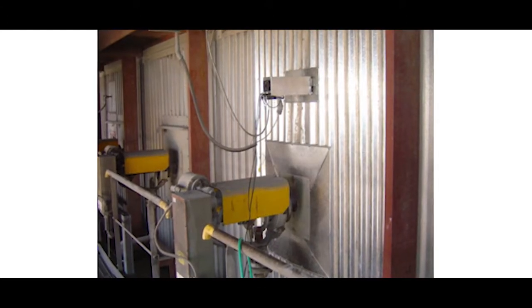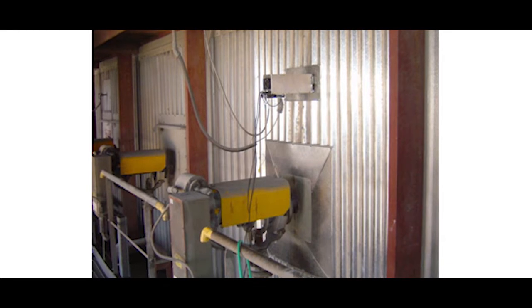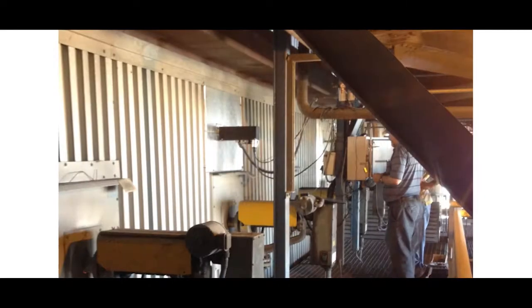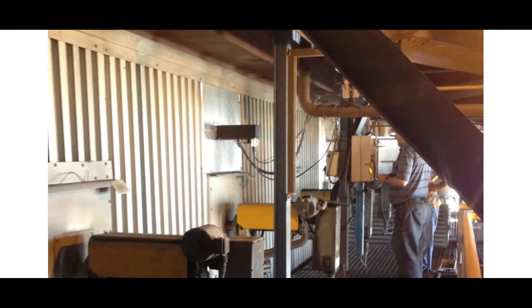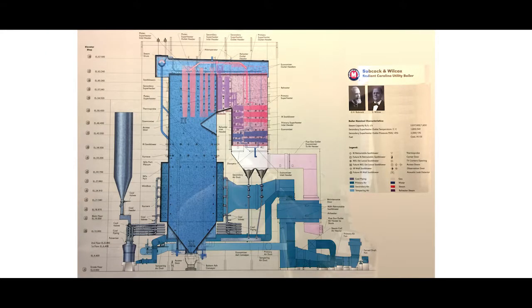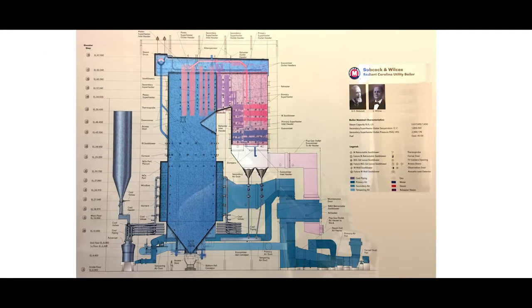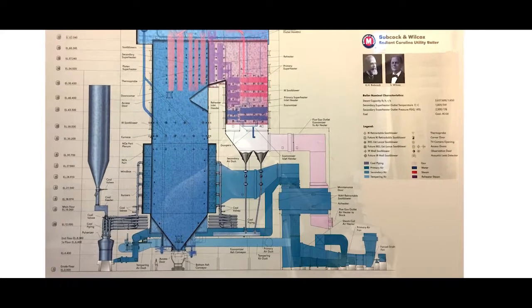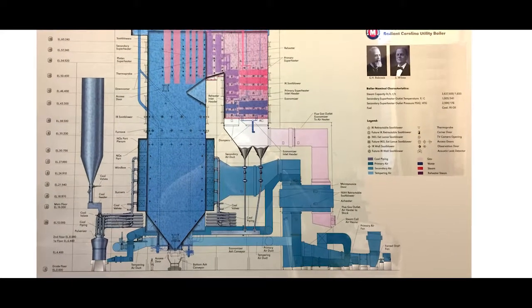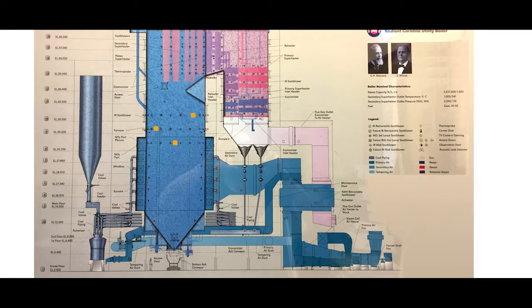An AMS representative will supervise the entire installation process including startup, commissioning, and training. Preparing a boiler begins by removing one-and-a-half by one-and-a-half foot patches of furnace thermal insulation from locations predetermined by AMS pre-retrofit testing.